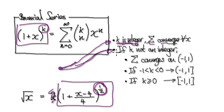So if k here is not an integer, which is our case, then you know for sure that it will definitely converge for anything between negative 1 and 1. This is excluding the endpoints.